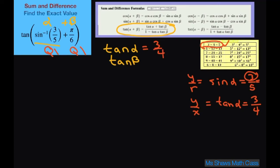And then we have tan of beta, which is just tan of pi divided by 6. That's going to be square root of 3 divided by 3. And then we can just use our formula.